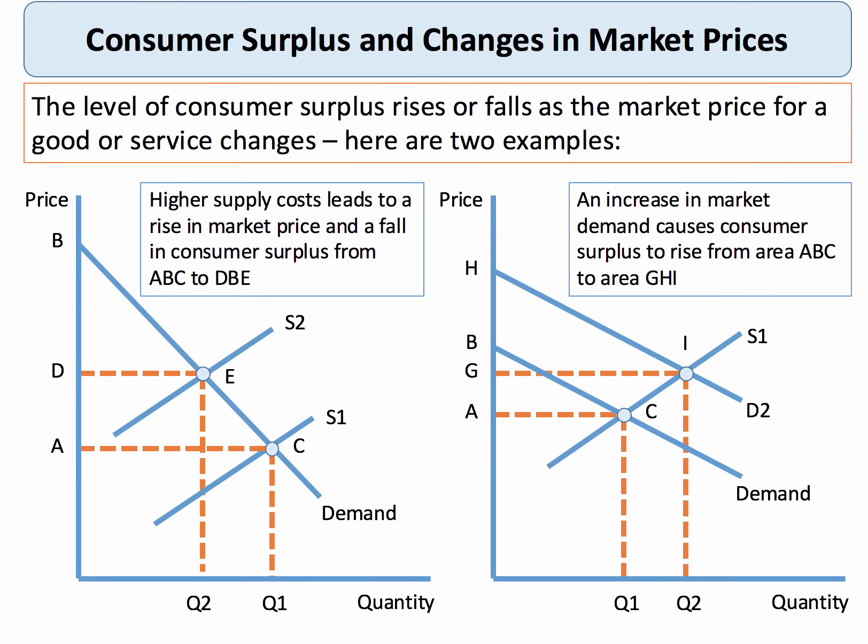In our second example we see the effect of an outward shift of the market demand curve for a product. The original quantity and price was A and Q1. After the shift in demand, the price rises to G and the quantity is Q2. Notice here that the increase in market demand does cause consumer surplus to increase — from area ABC to area GHI.